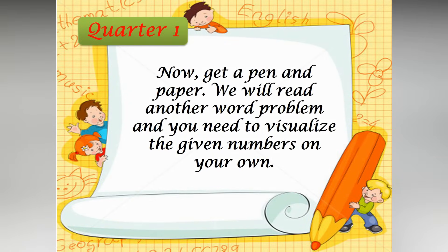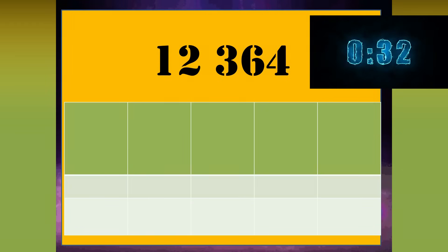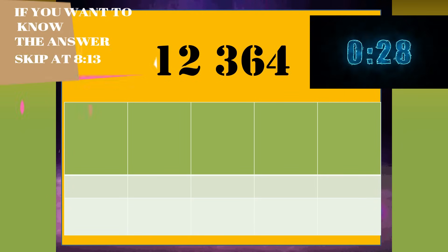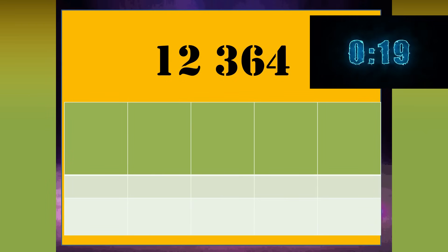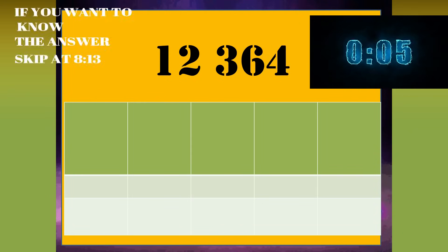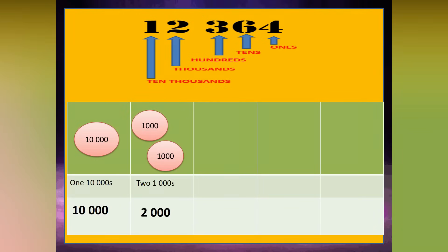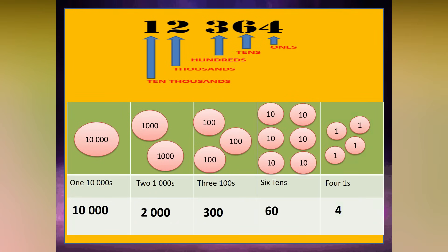Now, get a pen and paper. We will read another word problem and you need to visualize the given numbers on your own. I'll give you 10 seconds to get a pen and paper. To visualize 12,364, there is 1 ten-thousand, 2 thousands, 3 hundreds, 6 tens, and 4 ones.